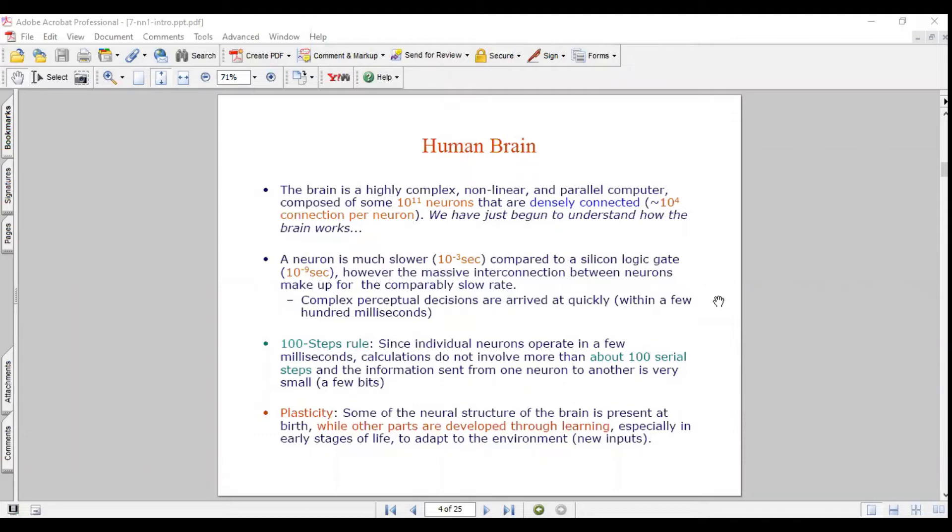The brain is a highly complex, non-linear and parallel computer composed of around 10 to the power of 11 neurons that are densely connected. A neuron is much slower as compared to silicon logic gate. Our neuron processing happens in 10 to the power of minus 3 seconds as compared to 10 to the power of minus 9 seconds in the silicon logic gate. However, the massive interconnections between neurons make up for the comparably slow rate. Complex perceptual decisions are arrived at quickly, within a few hundred milliseconds, faster than the silicon logic gate.